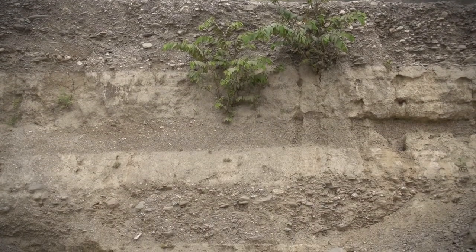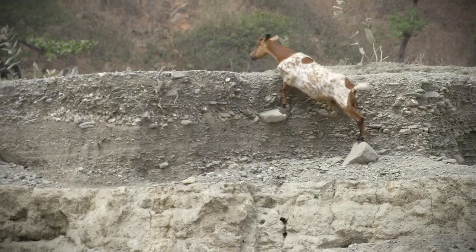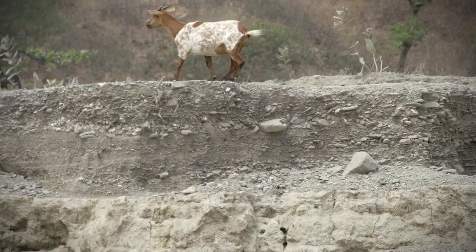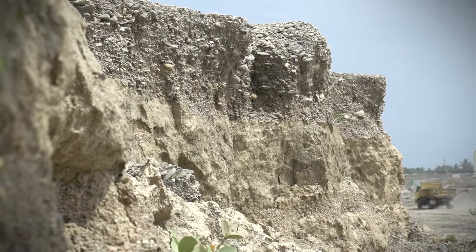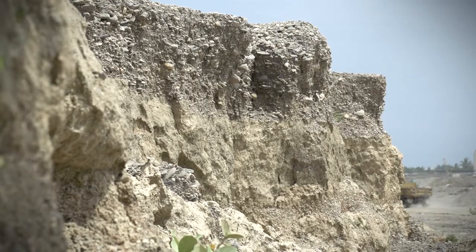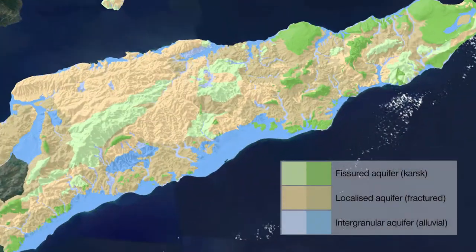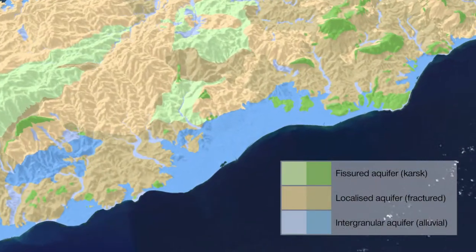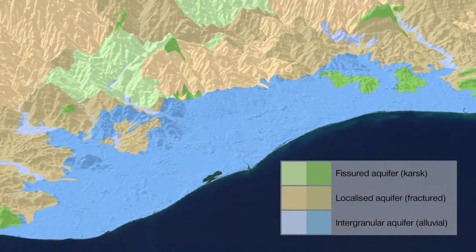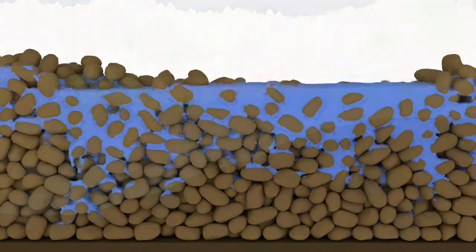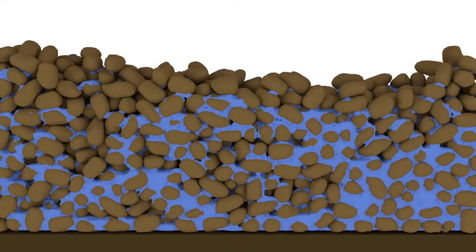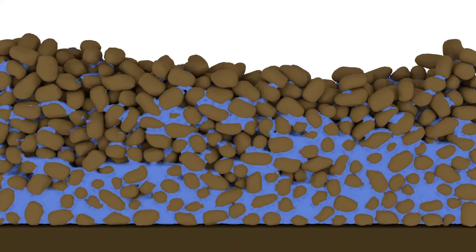In the sedimentary aquifers, the groundwater is concentrated along the coarse grain, cobbles, and sands, whereas it's restricted in the clay layers. It's the distribution of these which controls groundwater flow. These are called the intergranular aquifers, which occur as a thin strip around Timor-Leste. In these aquifers, the groundwater is stored between the sedimentary grains.